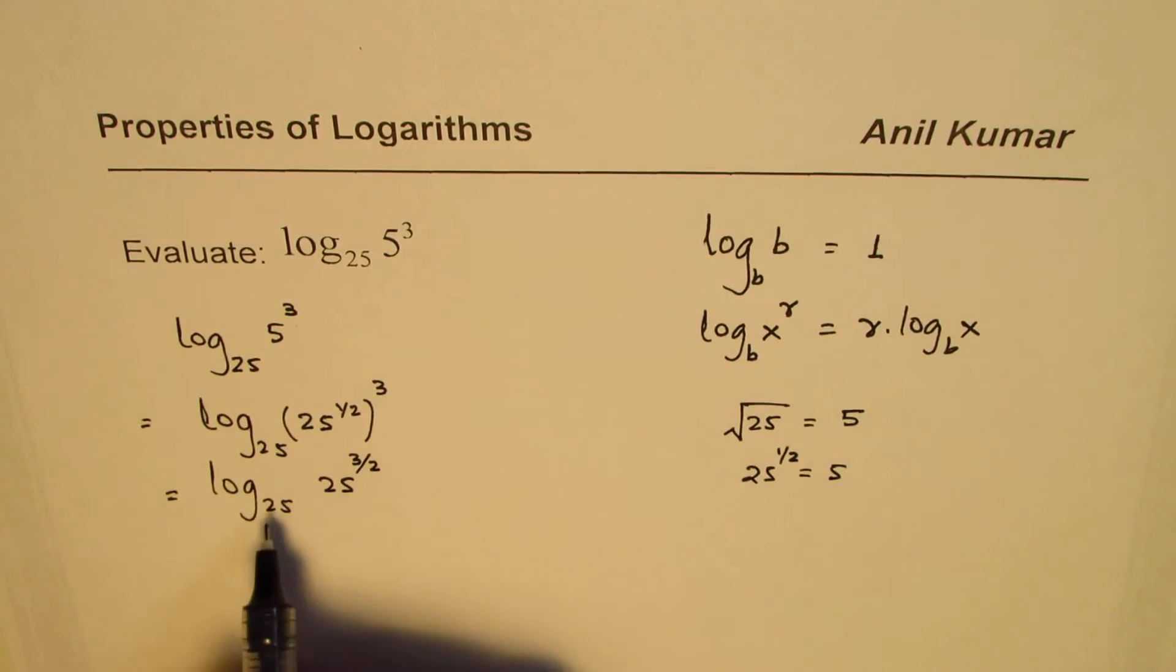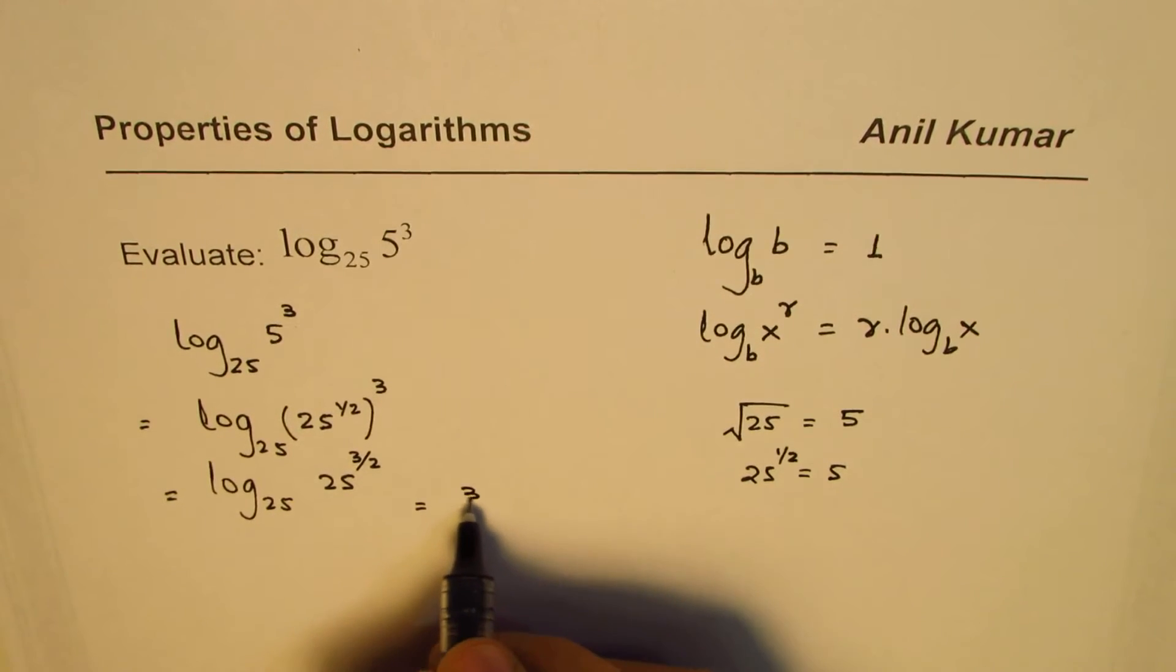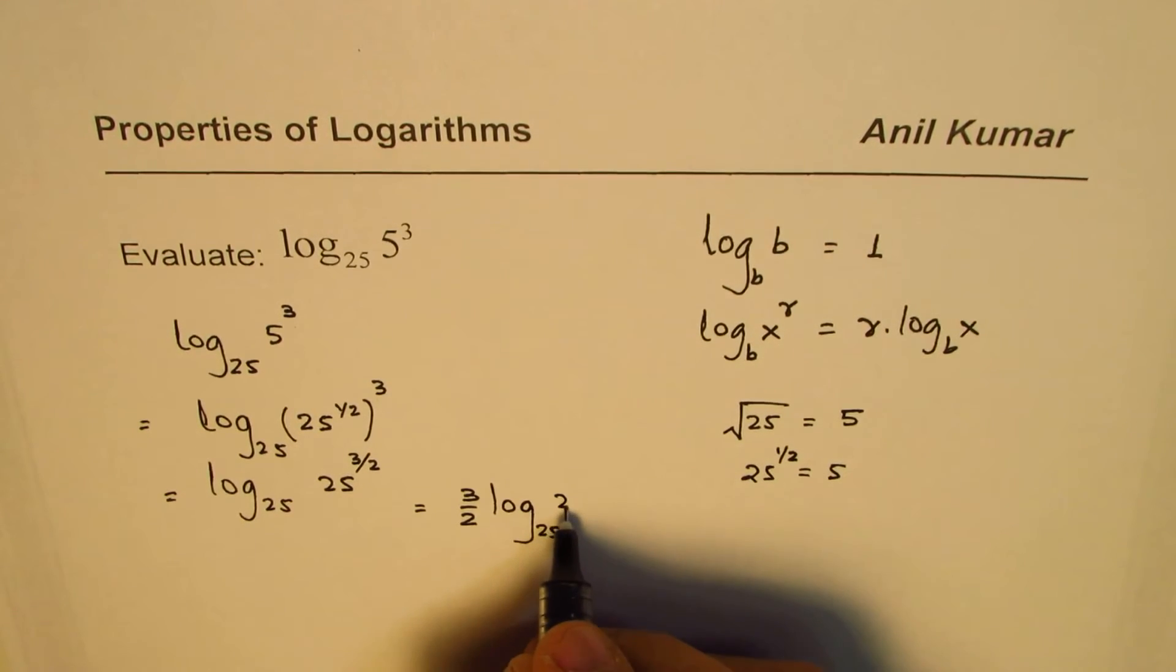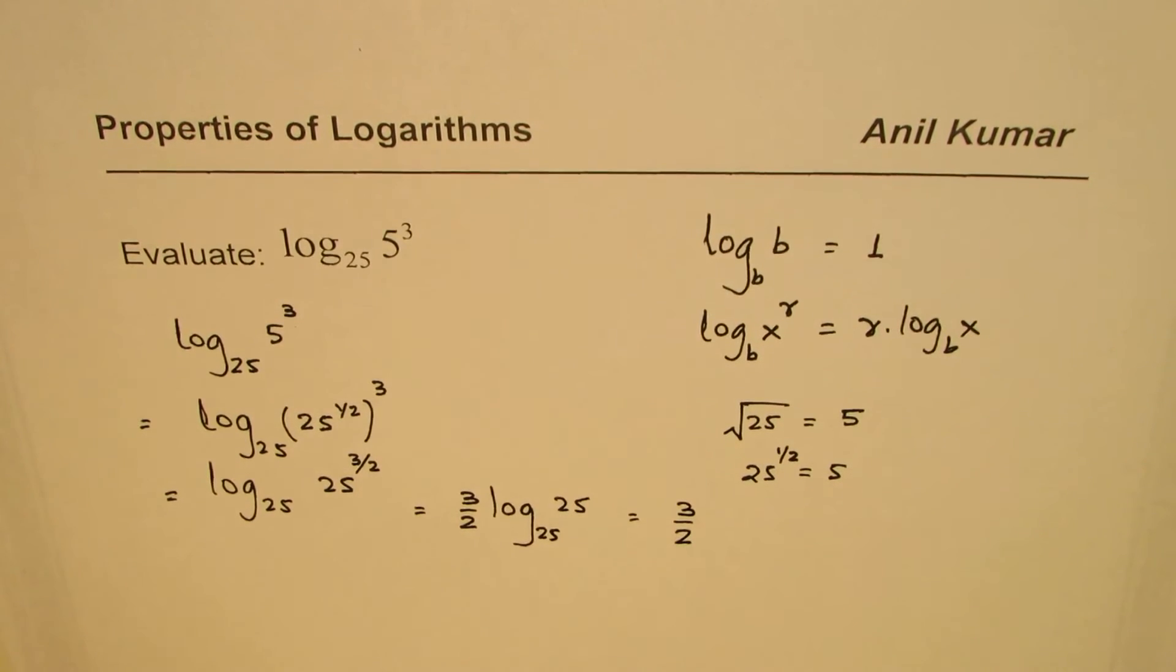Now applying this property, what do we get? We get 3 over 2 log to the base 25 of 25. Now this is 1, so we get 3 over 2 as our answer.